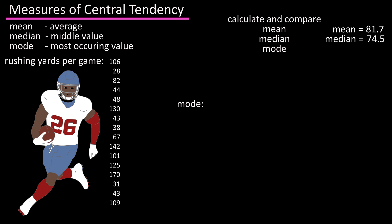Now for the mode, which is the value that occurs most in the data set. Looking through, we see that 43 is the most occurring value, twice, so our mode is 43.